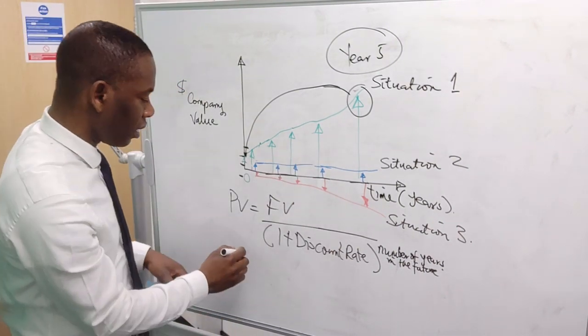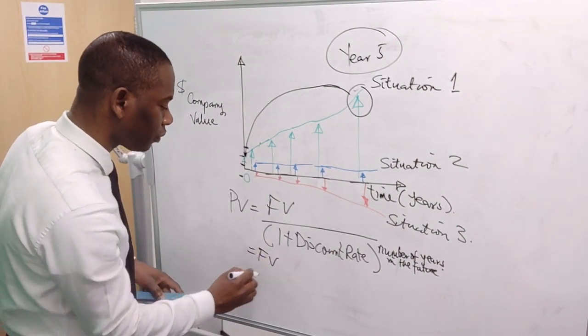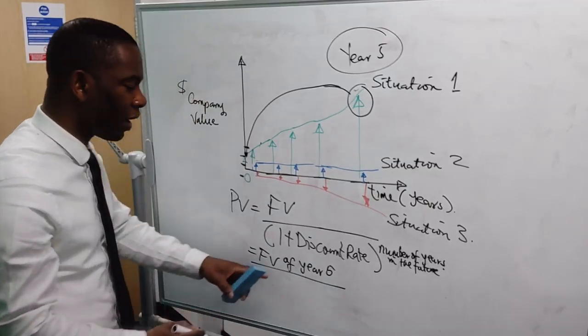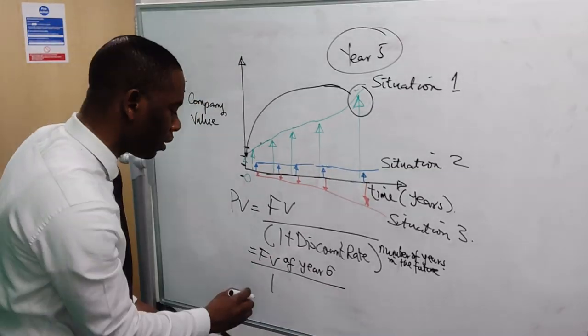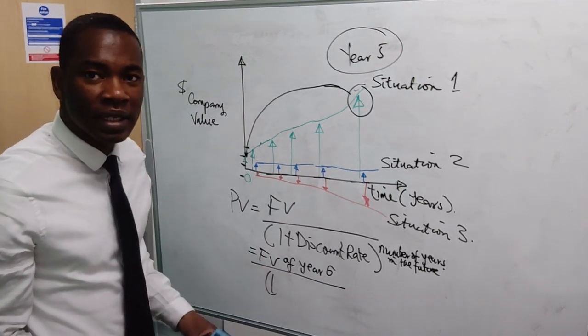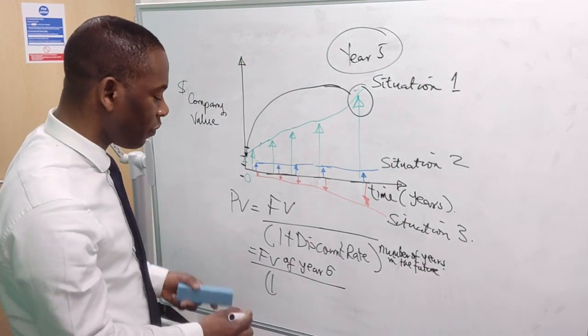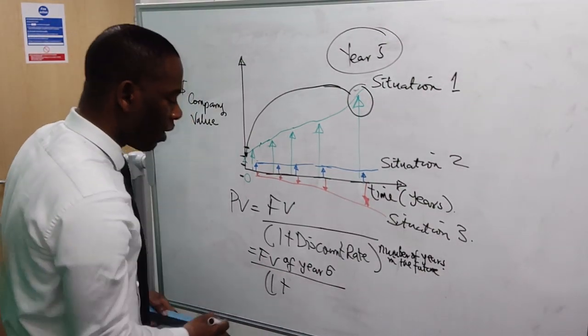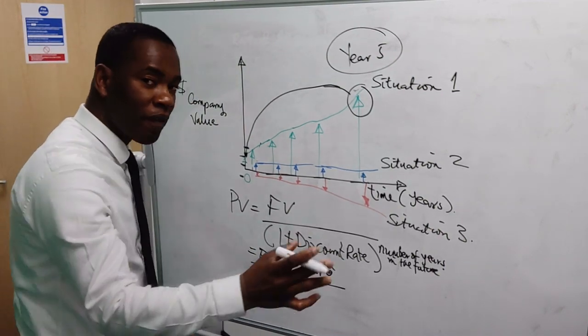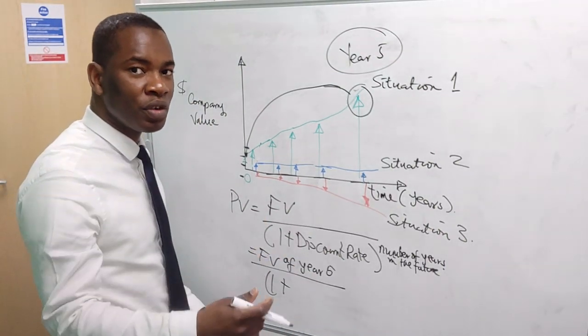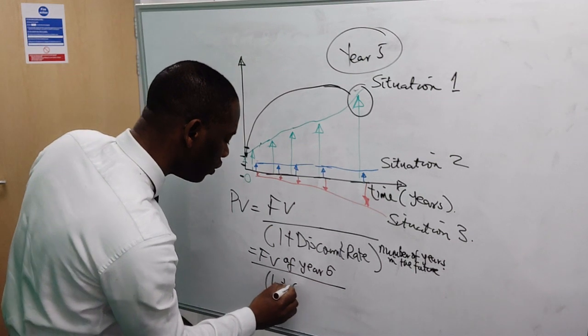Let's say our discount rate is 5%. So it's going to be one plus 5%, which is the same thing as 0.05.